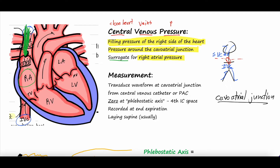So the central venous pressure is measured at the cavo-atrial junction — cava being the superior vena cava, atria being the right atria, and the junction of the two. It's a surrogate for right atrial pressure, or the filling pressure of the right side of the heart. Measuring it requires a central venous catheter — commonly called a central line — which is essentially a long IV typically placed at the neck and advanced to sit right at the cavo-atrial junction.